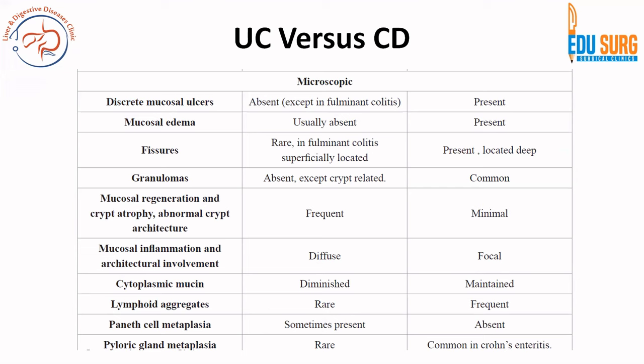Coming to the microscopic picture: discrete or skip ulcers are common in Crohn's disease, as are mucosal edema, fissures, and granulomas. In ulcerative colitis, mucosal inflammation and architectural involvement is diffuse — mucosal regeneration, crypt atrophy, and abnormal crypt architecture are frequent. Paneth cell metaplasia can be present in UC whereas pyloric gland metaplasia is common in Crohn's enteritis — remember this commonly asked MCQ. Cytoplasmic mucin is diminished in UC and lymphoid aggregates are rare.